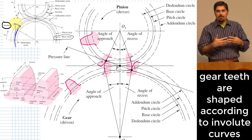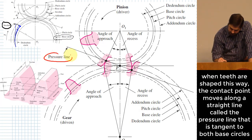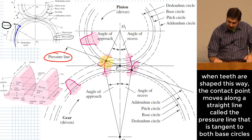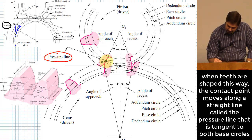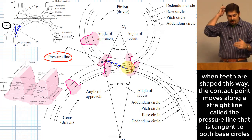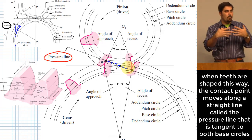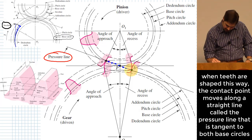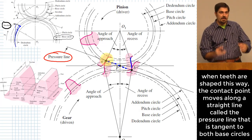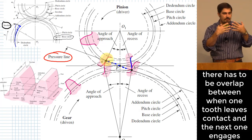This involute shape causes the teeth to mate in a way that produces a very smooth transfer of torque from one gear to the other. There are other tooth shapes, but nothing works as well. The shape of an involute curve makes the contact point progress along a straight line — the pressure line — at a sloped angle. This creates a smooth torque transmission, and as one tooth starts to leave contact, another has already begun to engage, so there's a period where two or more teeth are carrying the load.